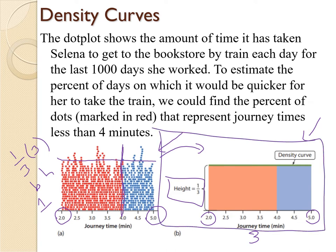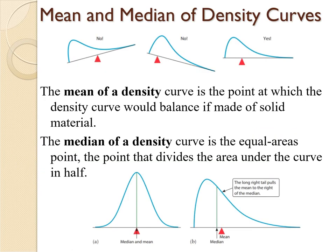The reason that we like that is because now if we want to find the probability that she takes longer than four minutes, we're just going to find the area of this section. This blue section is going to have that same height, one-third. The base of this one, four to five, is one. So the area of base times height is one-third or 0.333. So about 33% of the time, she's going to save time by taking the train to work.